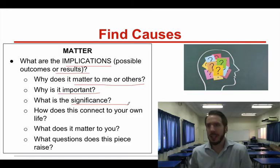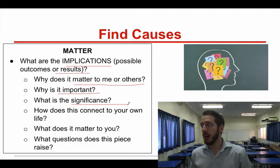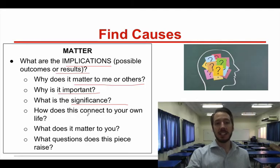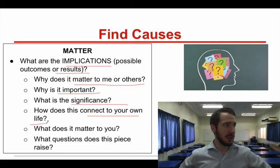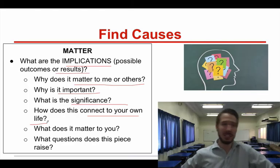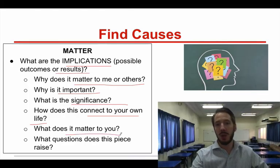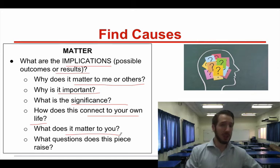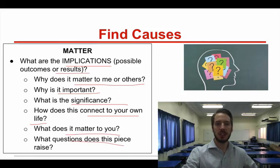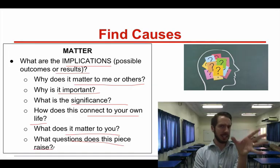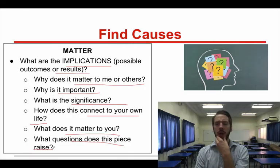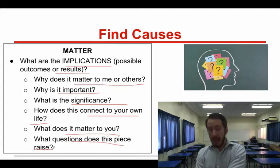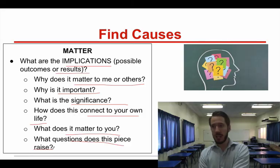For example, if you're looking at a study on the efficiency of solar power, why is that significant in the context of global warming, renewable energy, or non-renewable versus renewable energy? How does this connect to your own life? If you think solar power is efficient and your parents are thinking about getting solar panels on their house, then yeah — that connects to your life. What does it matter to you? Why did you choose this topic? Why do you think it's important? Be reflective about why you're choosing that topic, and what questions does this piece raise? What are they missing? What do you want to know more about? How can you go deeper into this topic after reading that text?